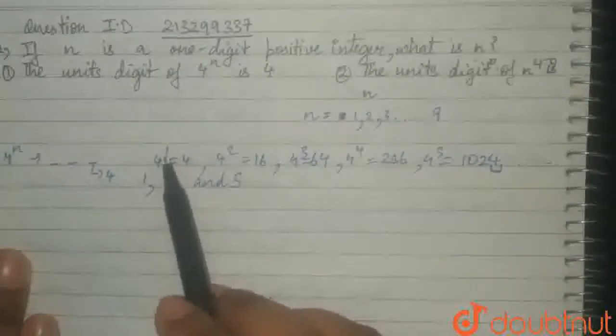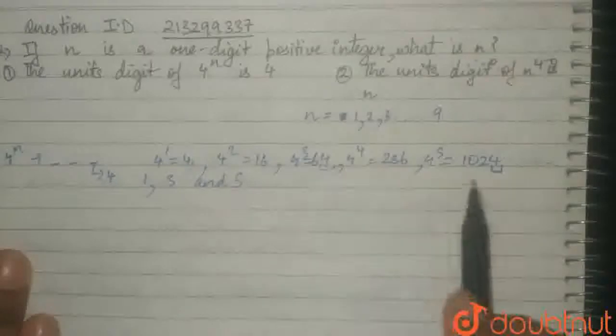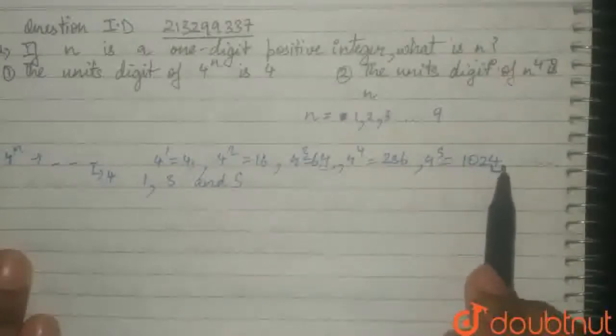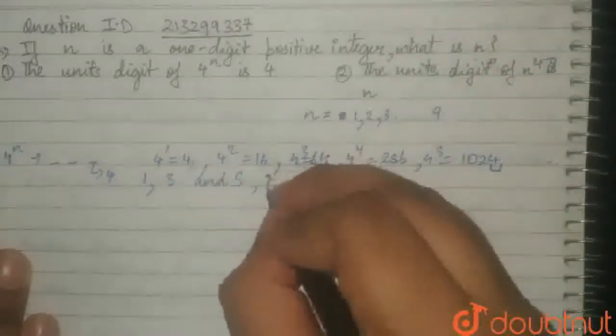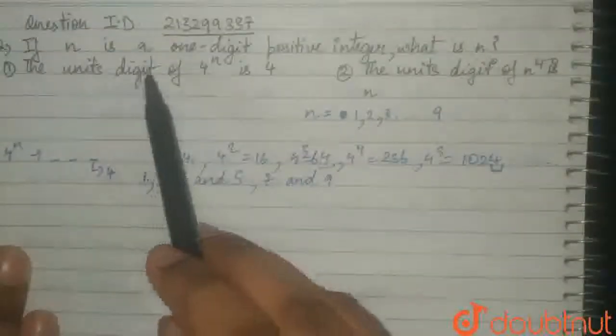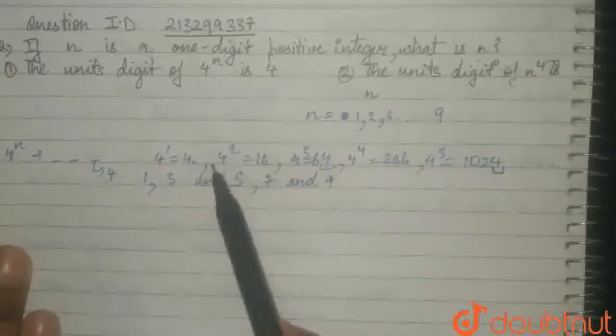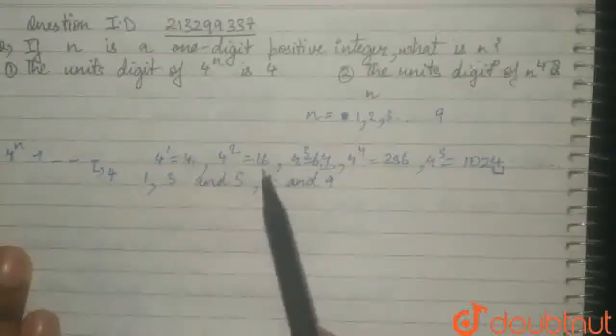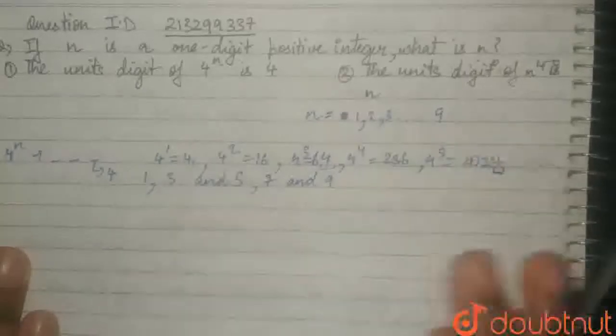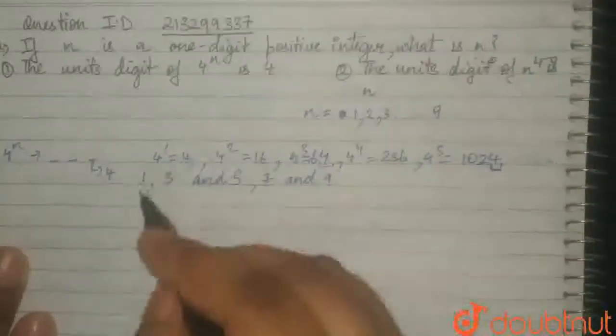So, for the exponent 1, 4. For the exponent 3, 4. For the exponent 5, 4. And similarly, we find for exponents 7 and 9, the unit's digit will be 4, since the pattern is for 4 unit's digit, then 6, then 4, then 6, then 4, then 6. This keeps repeating itself in the unit's place.